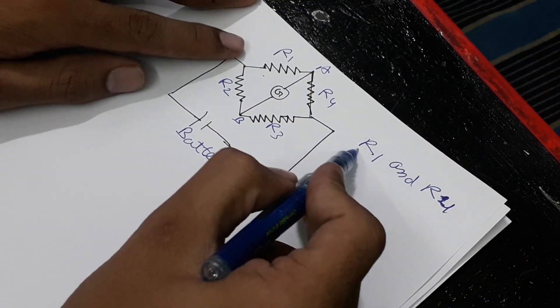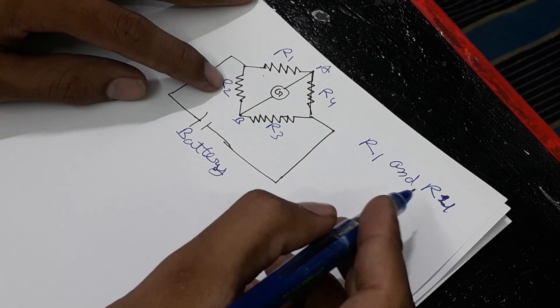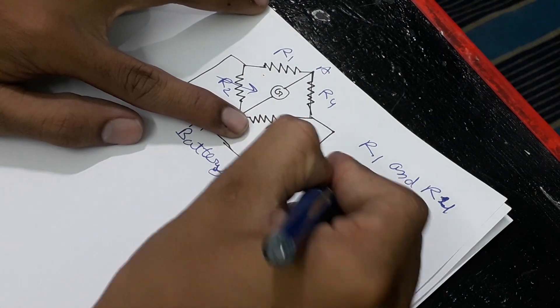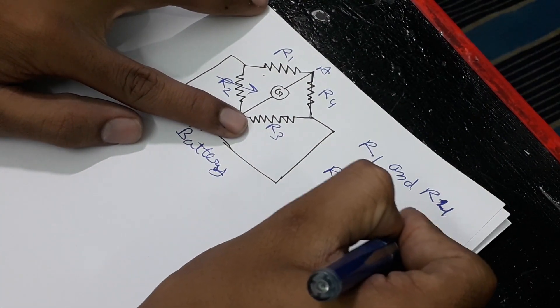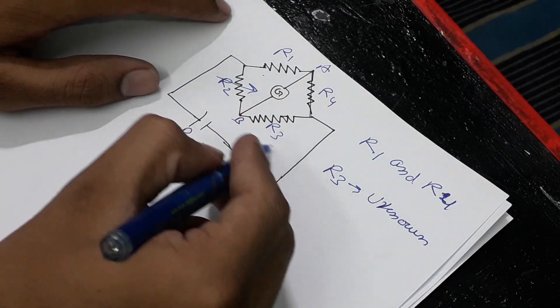Now R1 and R4 resistances are known to us. R2 is a variable resistance and R3 is an unknown resistance. And we wish to find the resistance of R3.